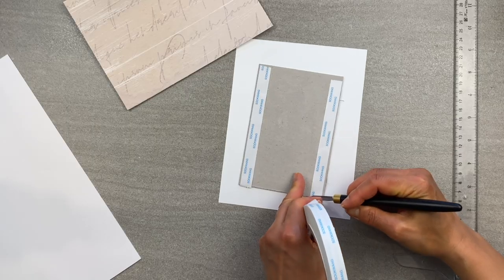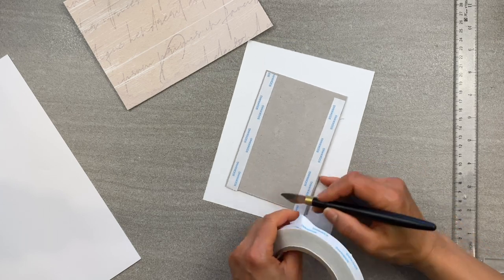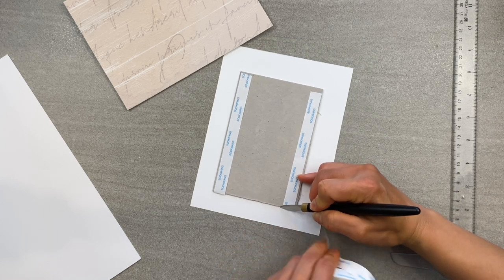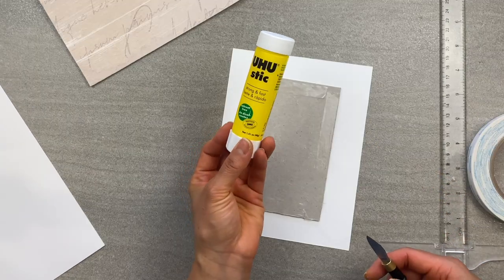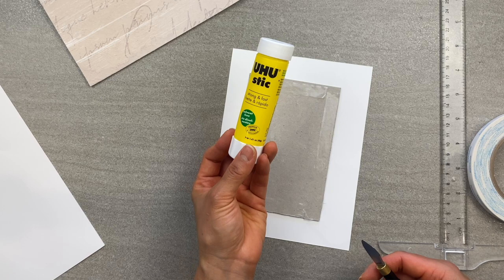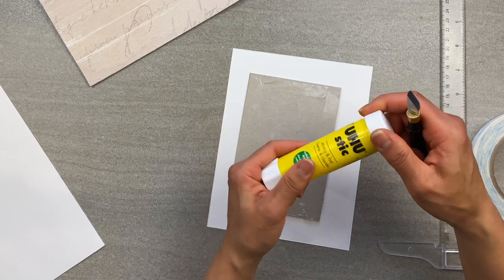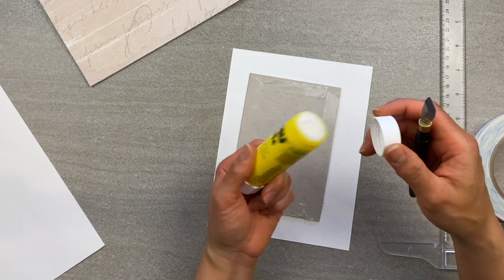For the eyeballing technique, center the chipboard base in the middle of the cover sheet like this and glue it down with any adhesive you have. Oh my gosh, I left the cover off of this glue stick and now it's hard as rock.